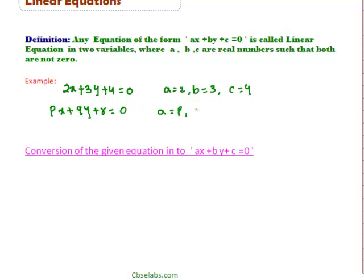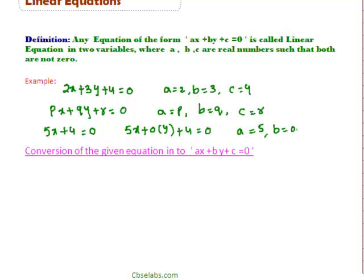Here a is equal to p, b is equal to q, and c is equal to r. Let's take another example: 5x plus 4 is equal to 0 is also a linear equation, since 5x plus 4 can be written as 5x plus 0 times y plus 4 is equal to 0. Clearly this is in the form ax plus by plus c equal to 0, where a is equal to 5, b is equal to 0, and c is equal to 4.